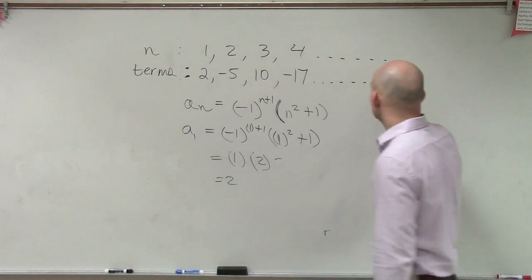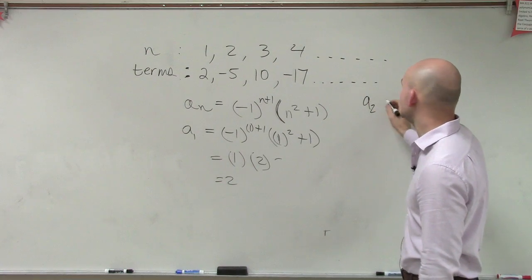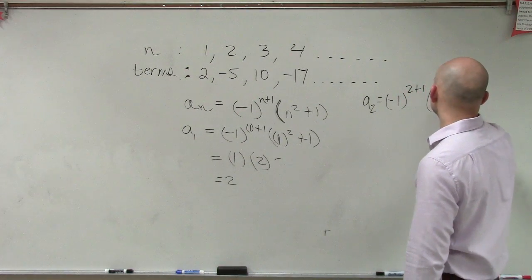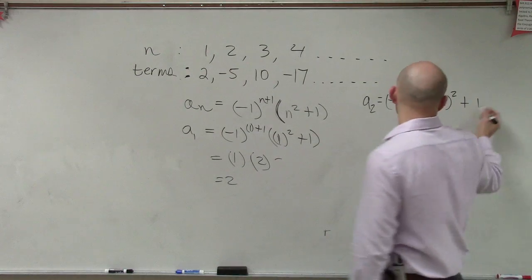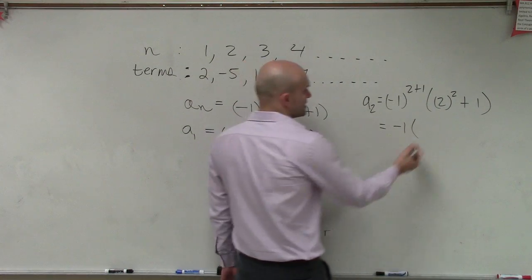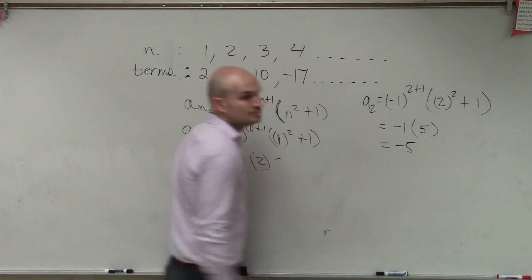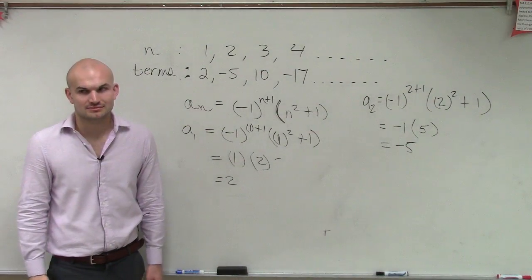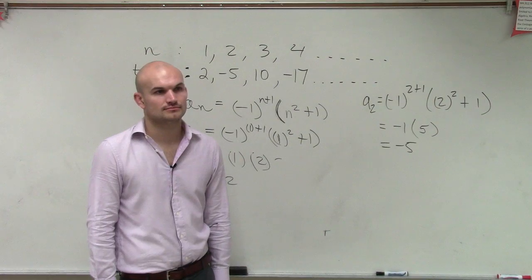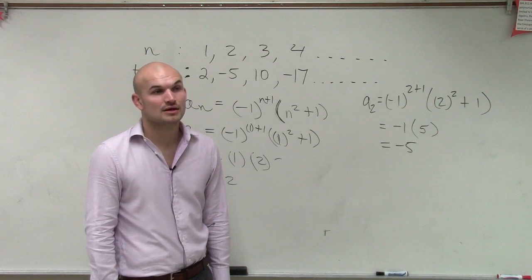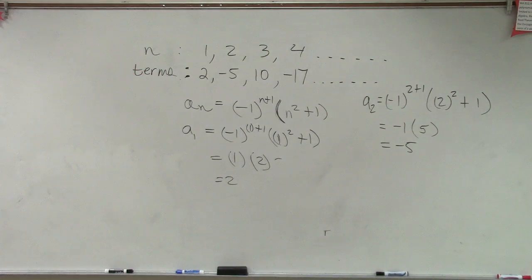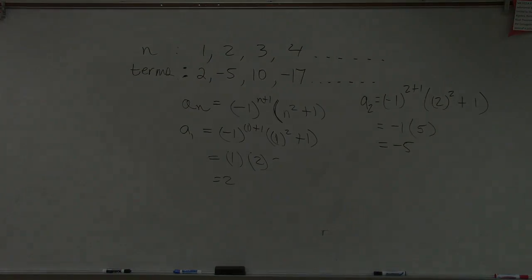Let's try a₂ to make sure. a₂ equals negative 1 to the power of (2 + 1) times (2 squared + 1): 2 + 1 is 3, negative 1 cubed is negative 1, and 2 squared is 4 plus 1 is 5, giving negative 5. That looks right — we're on the right path. We're not guessing, we're just working through the relationship, and that's exactly what I was trying to describe.